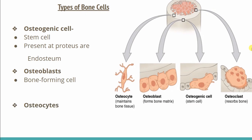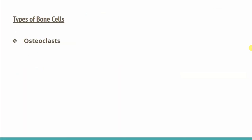Third, we have osteocytes. The main bone-forming cell produces a matrix, and the main function of osteocytes is the maintenance of bone.